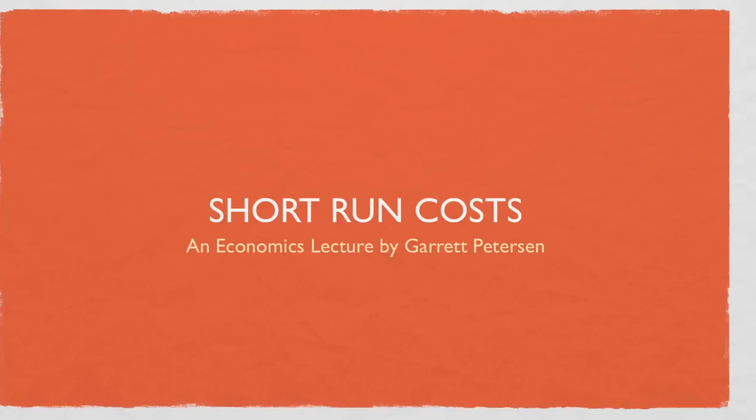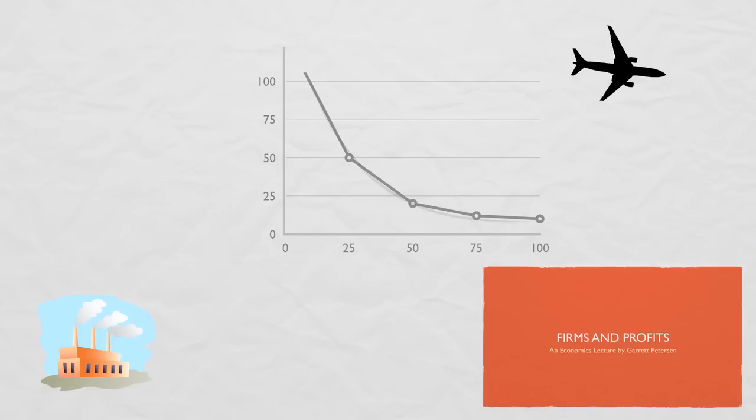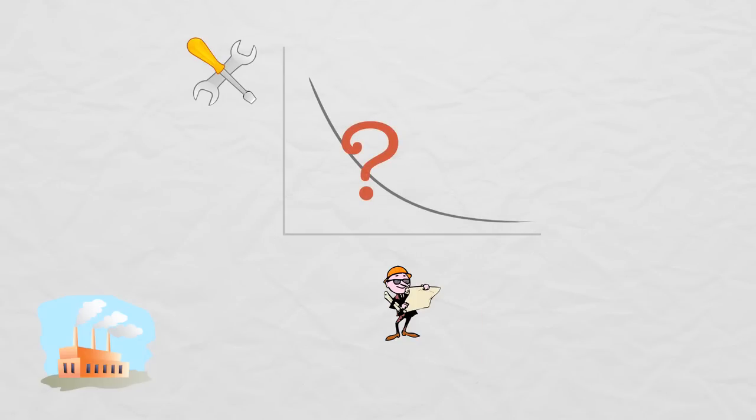Short Run Costs. Recall the basic cost minimization problem established in firms and profits. We had this funny curve called an isoquant, which cut through all the combinations of capital and labor that produced exactly three airplanes.